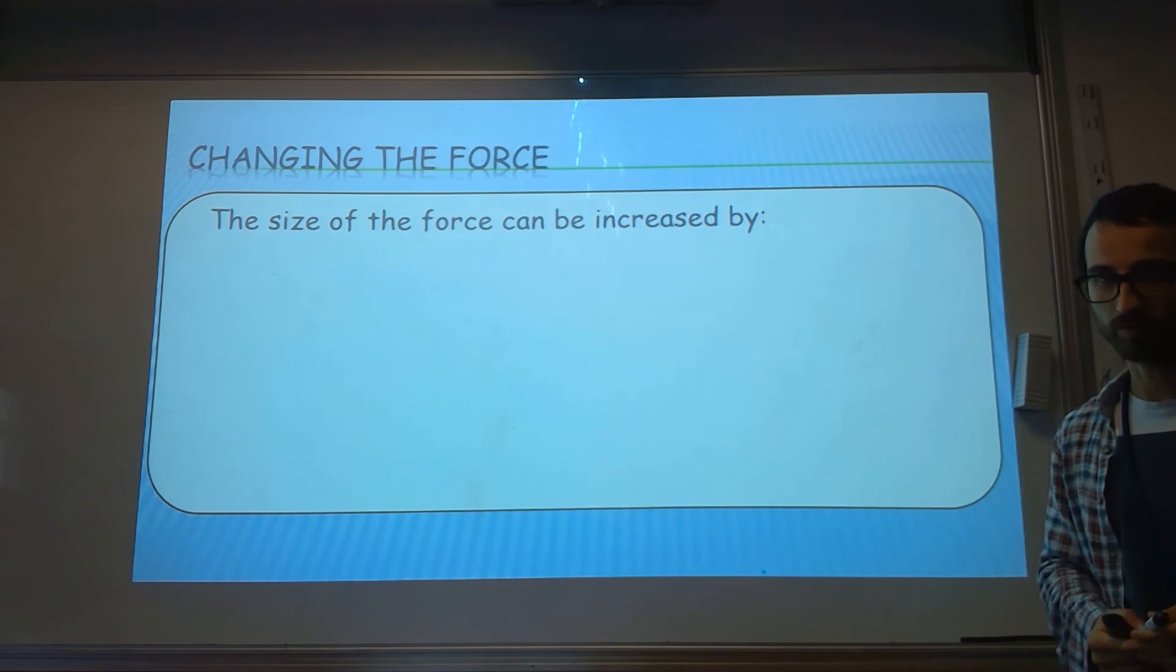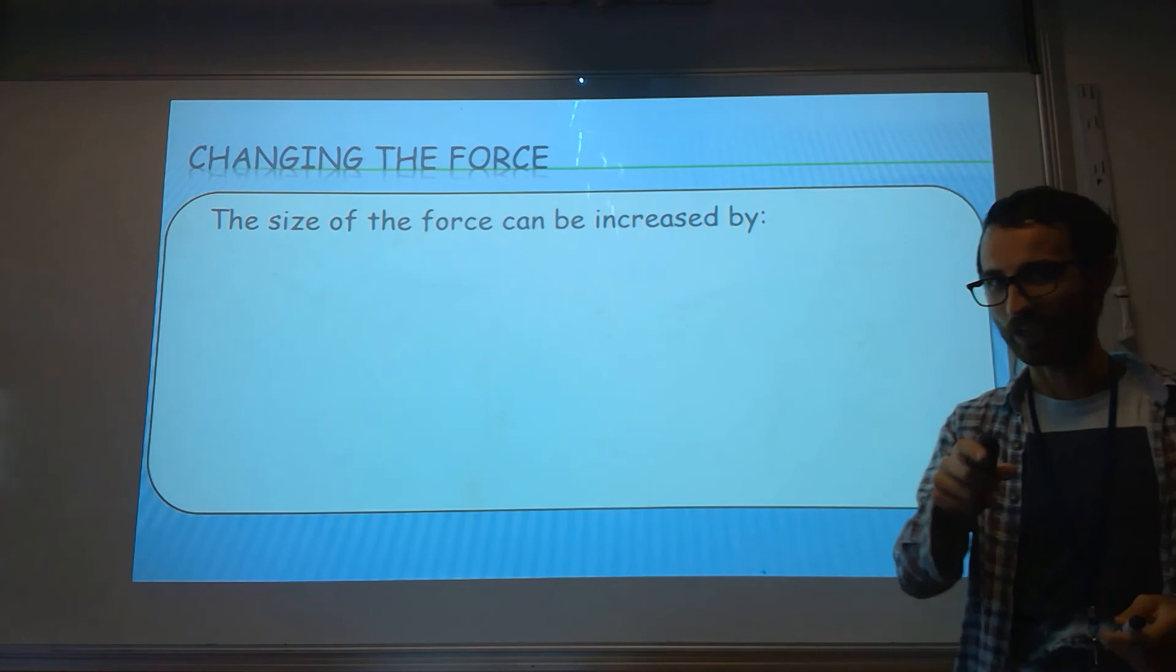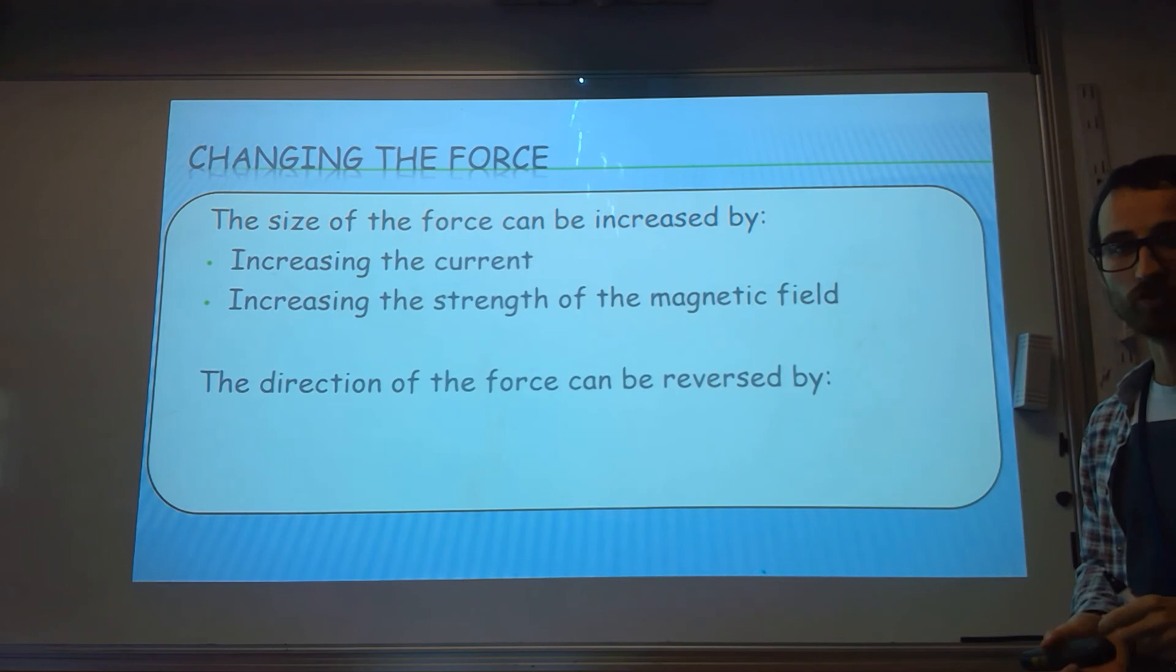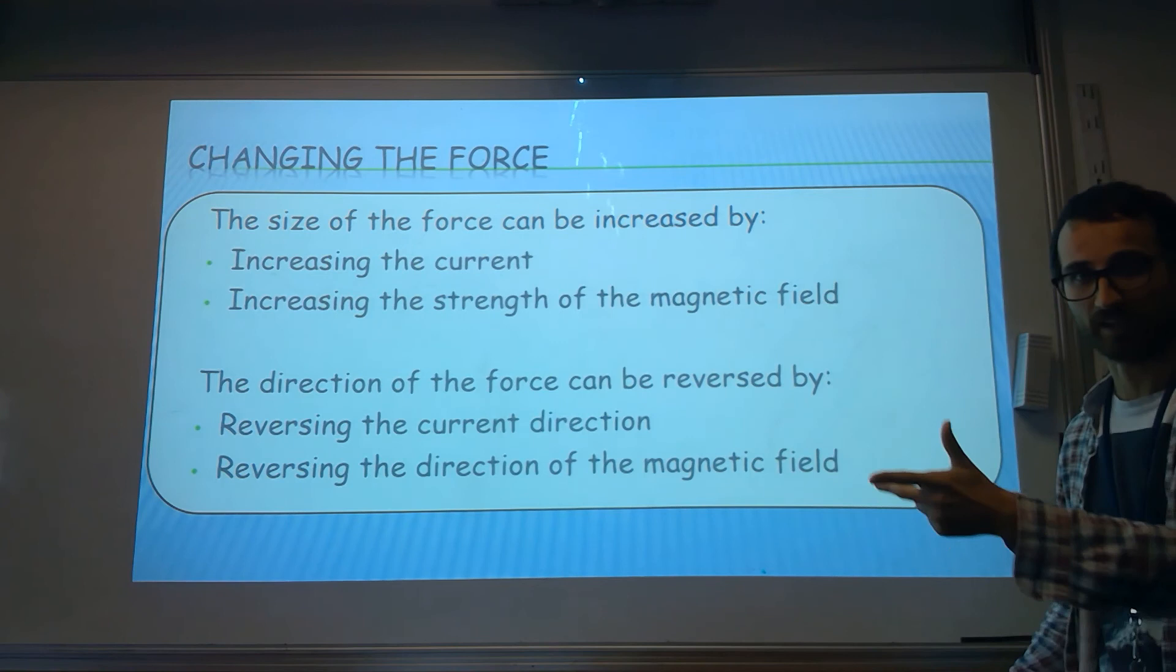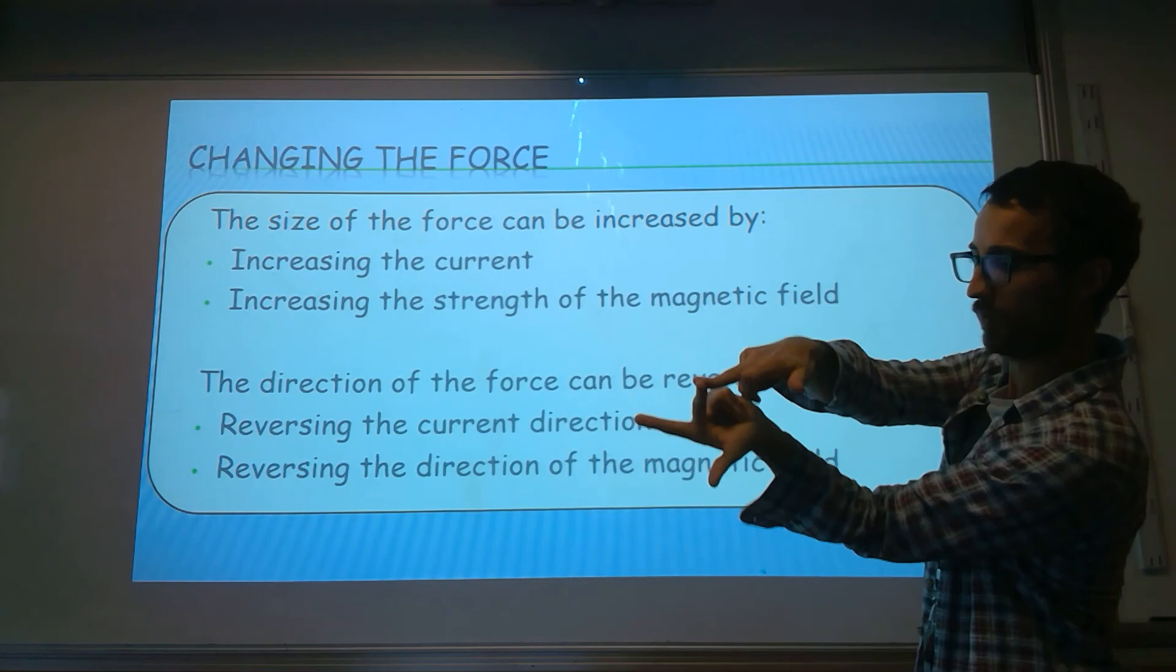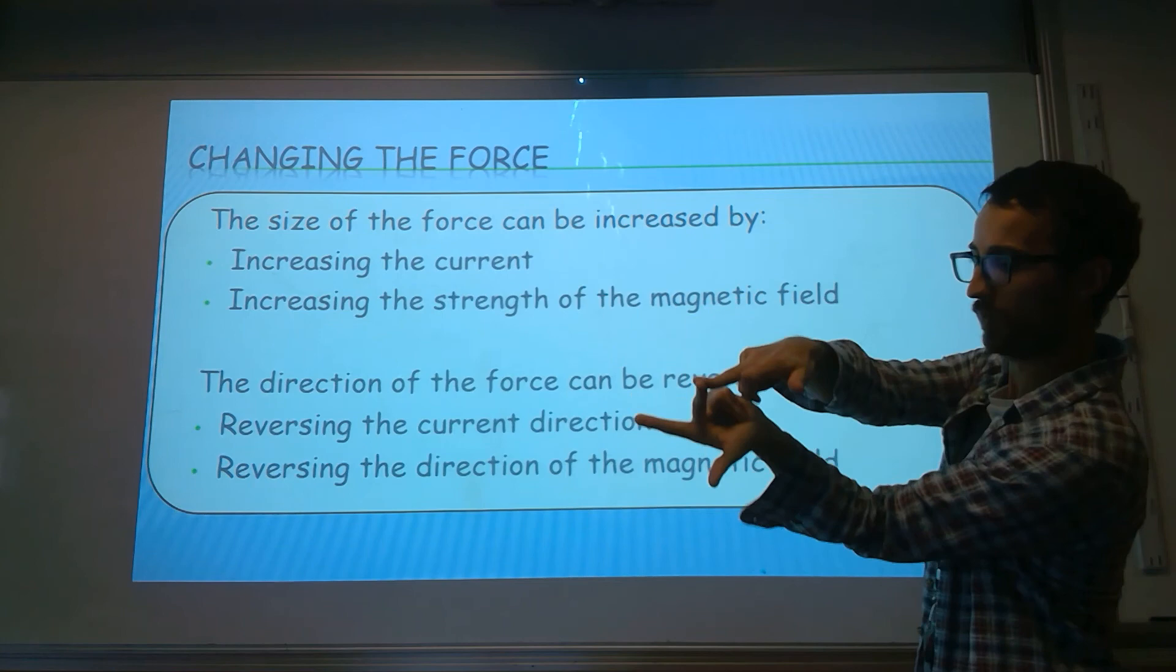How can we increase the force? Increase the current, or you could increase the strength of the magnetic field. If you wanted to reverse the direction of the force, you could either reverse the current or reverse the direction of the magnetic field. And you can see that from Fleming's left-hand rule. If the current's going that way, I reverse it, you can see how the thumb flips around - the force is reversed. If I change both these at the same time, no good, because the force will end up being the same as the original direction. Have a go with your hand and you'll see that. Thank you for watching. I hope you found it useful.